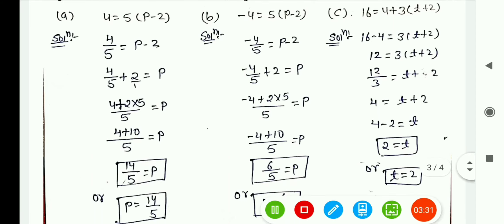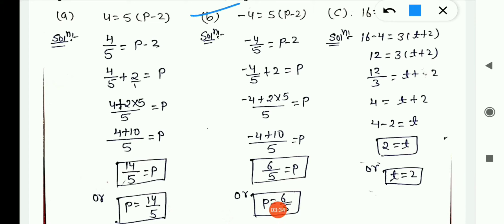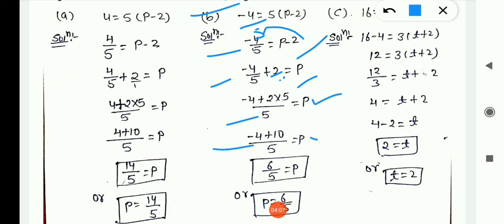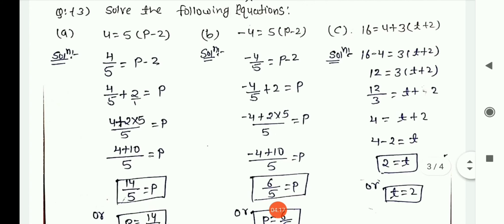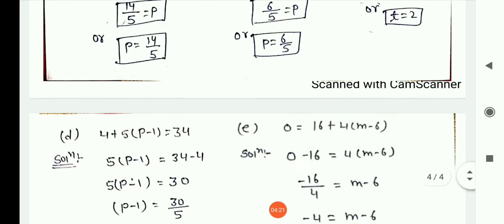Now (b) is: −4 = 5(p − 2). Shift 5 to LHS as division: −4/5 = p − 2. Shift −2 to LHS as +2: −4/5 + 2 = p. Taking LCM of 5: (−4 + 10)/5 = 6/5. So p = 6/5. Similarly, you do (c) yourself.